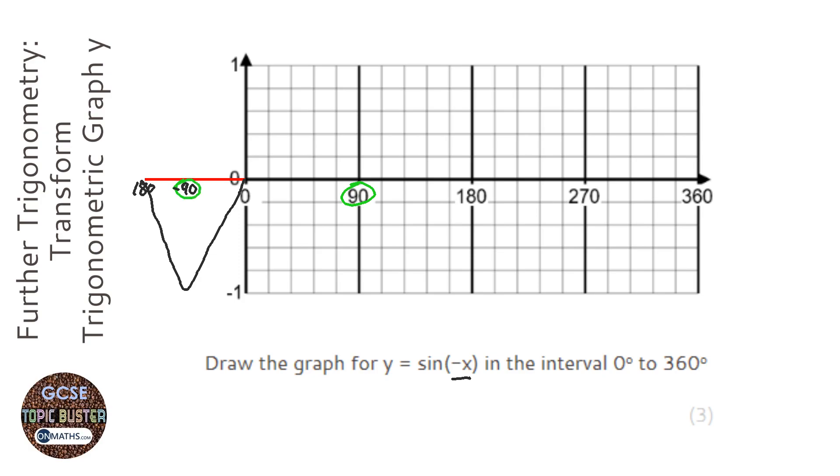This really should be minus 90 minus 180, shouldn't it? That would make more sense. Let's just get rid of that and type in minus 180 there. So at minus 90, sine is actually at minus 1. So the graph for sine will end up like this.